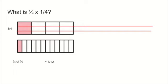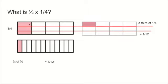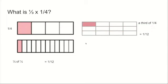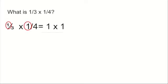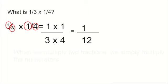I can also imagine this by splitting it using horizontal lines. Again, I start with my quarter, divide it into three pieces, and take one of them. One third of one quarter equals one twelfth. Using the written method: we find the numerators and multiply them together, find the denominators and multiply them together. One times one is one, three times four is twelve — one twelfth, the same answer as before.